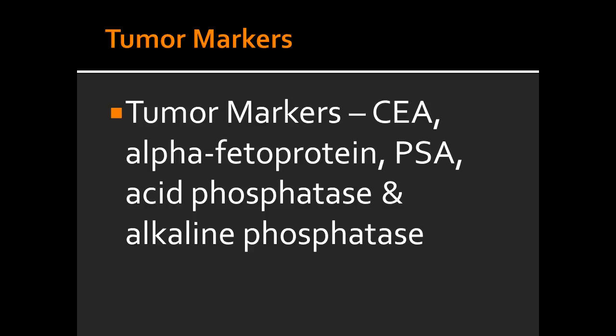What is the tumor marker alkaline phosphatase used to detect? Alkaline phosphatase is used to detect metastasis to bones. It is also used to detect obstructive biliary disease and Paget's disease.